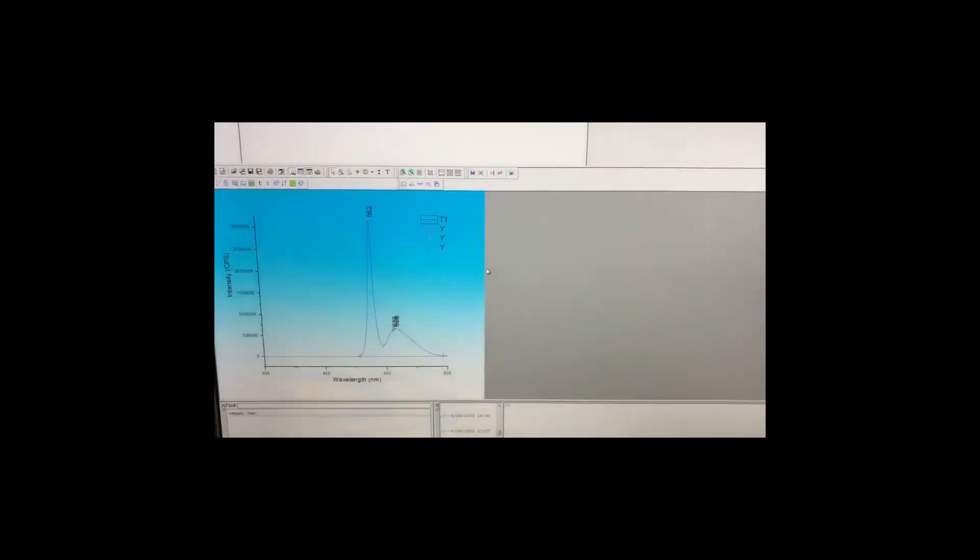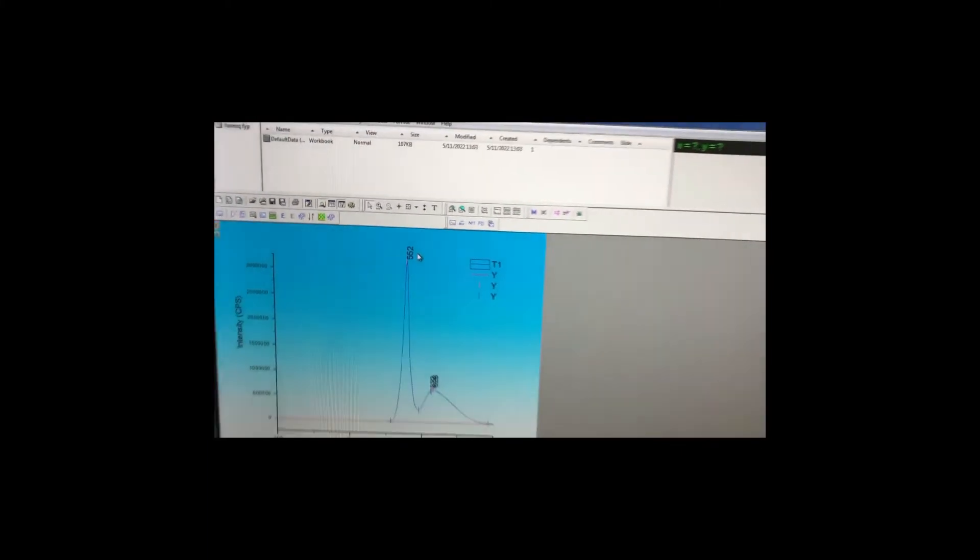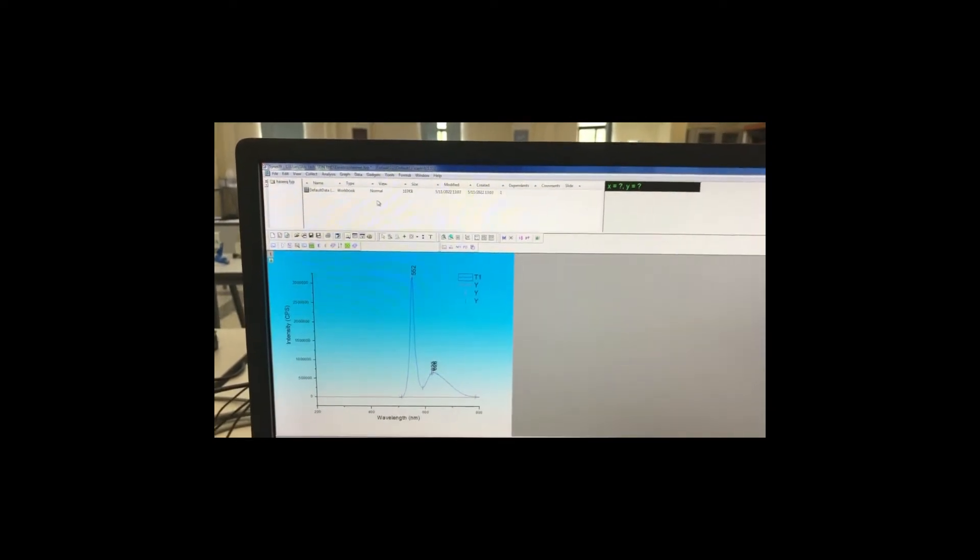This is to show us what the peaks look like. So after we get this number, now we can do the real time control.